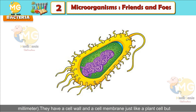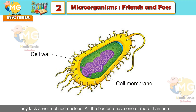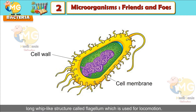Bacteria have a cell wall and a cell membrane, just like a plant cell, but they lack a well-defined nucleus. All bacteria have one or more long whip-like structures called flagellum, which is used for locomotion.